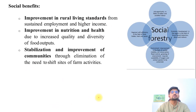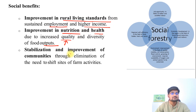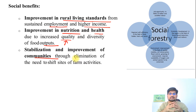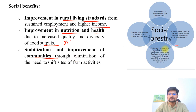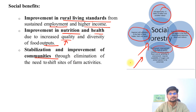The last aspect is social benefits. These include improvement of living standards in rural areas with higher income, sustained employment, nutrition and health facilities, and quality of life. Stabilization and improvement of communities is achieved through the elimination of the need to shift sites of farm activities. Job opportunity, economic development, environmental development, and regional sufficiency are the four pillars of social forestry — important to remember and quote while writing your answer.